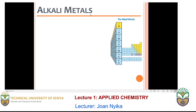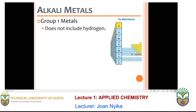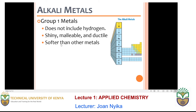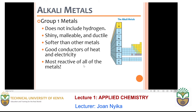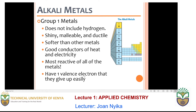The alkali metals consist of lithium, sodium, potassium, rubidium, cesium, and francium. The group one metals do not include hydrogen. They have the following characteristics: they are shiny, malleable, and ductile. They are softer than all other metals and are good conductors of heat and electricity. They are the most reactive of all metals and they have a valence of one electron.